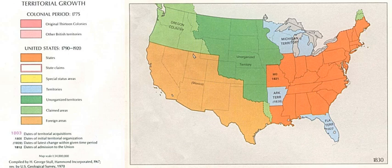The unorganized territory with the largest population was Camp Lejeune, North Carolina, a United States Marine Corps base with a census population of 34,452 inhabitants.